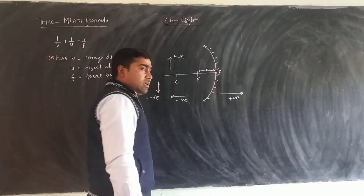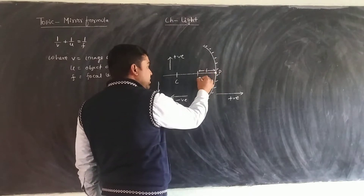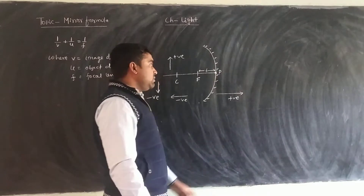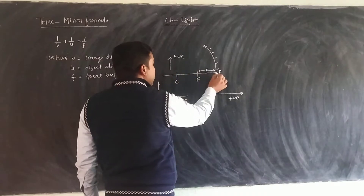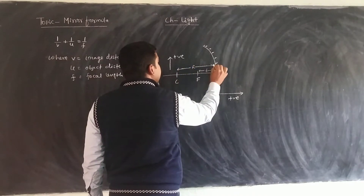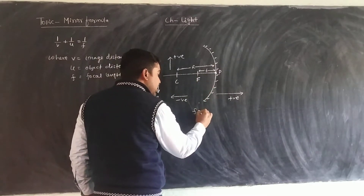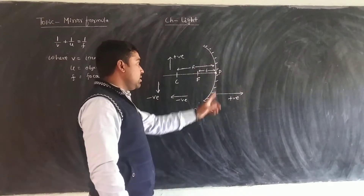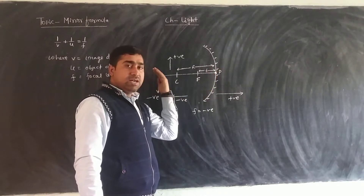If we define focal length — the distance between pole to principal focus is known as focal length, and the distance between pole to center of curvature is known as radius of curvature. In this case, f is negative because the principal focus is to the left side of the pole, and all distances measured to the left side are negative.